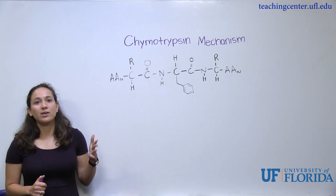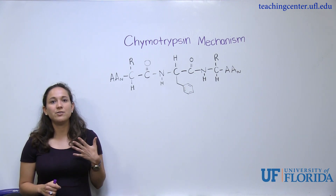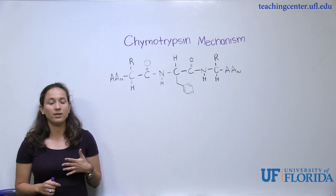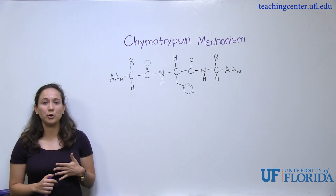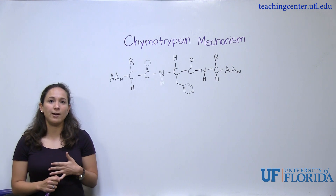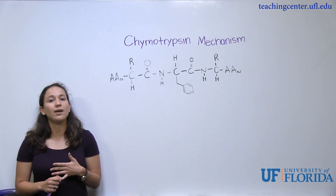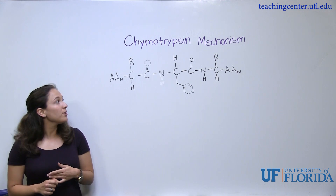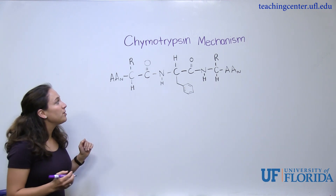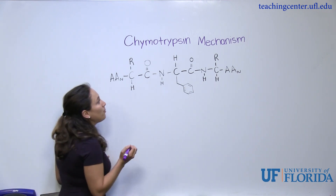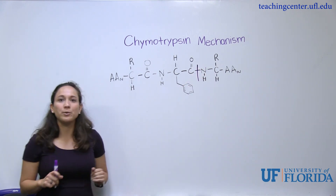Chymotrypsin doesn't cleave at just any peptide bond — it cleaves at a very specific peptide bond. It cleaves at the C-terminal of any aromatic group. Recall that the aromatic groups are tyrosine, tryptophan, and phenylalanine. So if you were given a generic polypeptide, you would know that chymotrypsin would cleave at the C-terminal of that aromatic group.